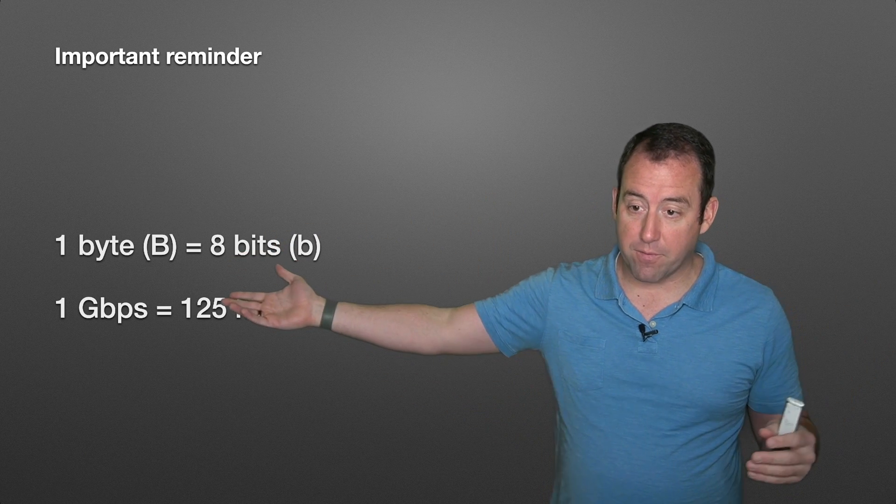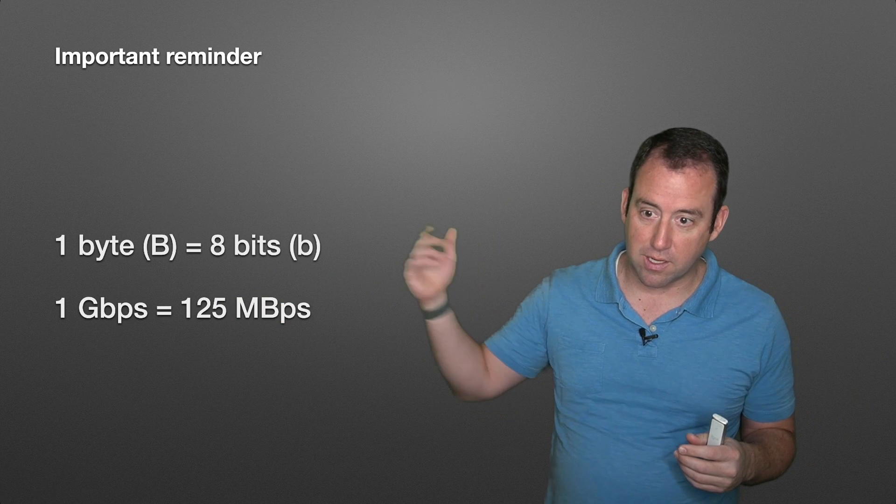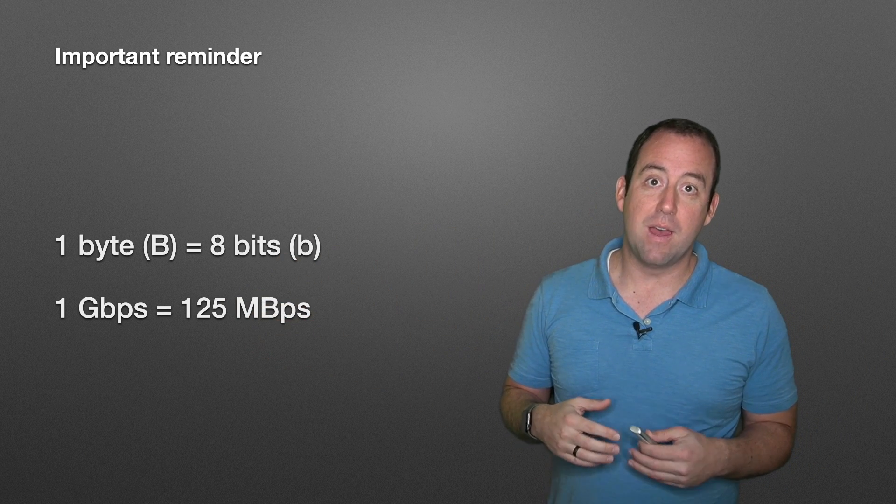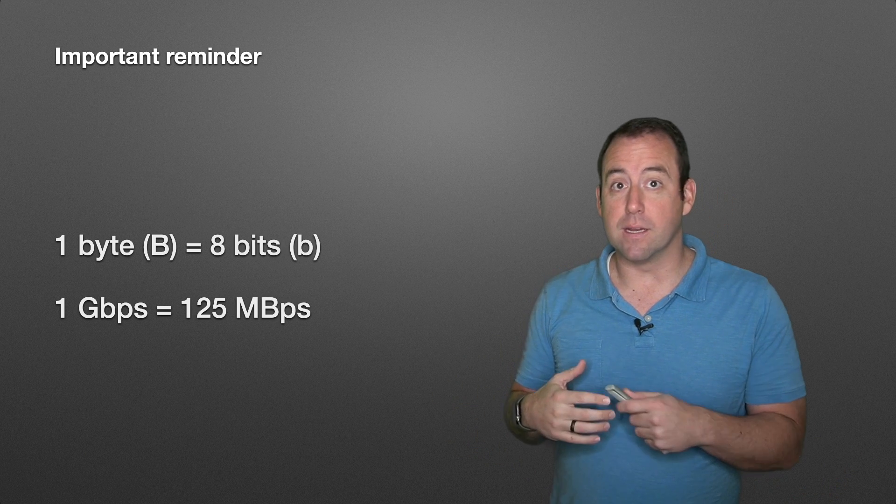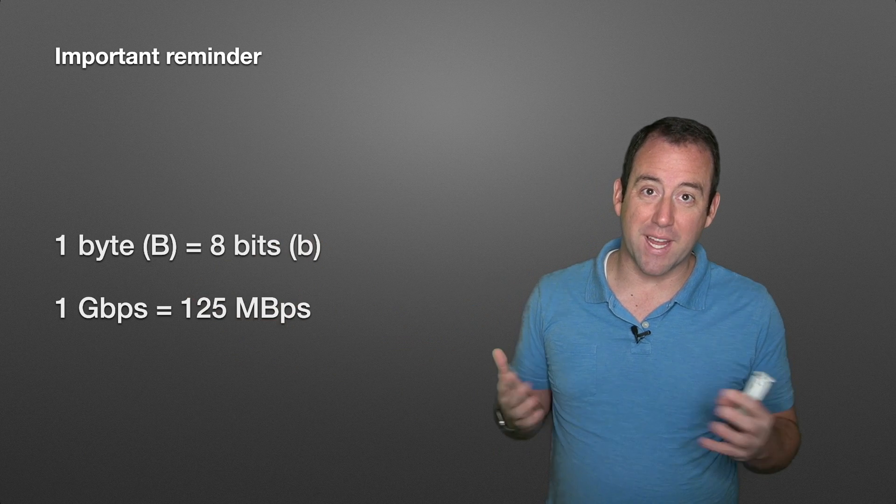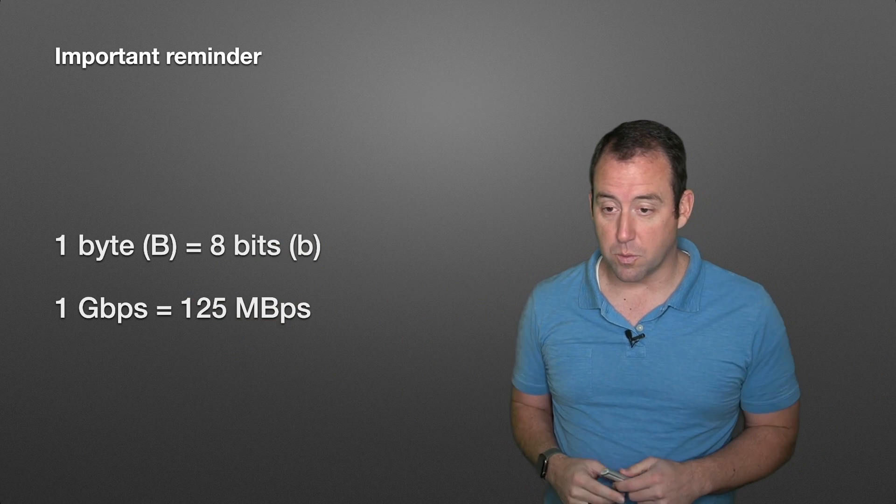So if you're paying, let's say you're paying for a one gigabit per second internet connection, the fastest download that you can expect to see is 125 megabytes per second, because one gigabit is 125 megabytes because of that eight to one ratio.